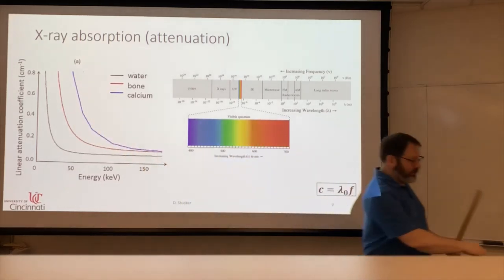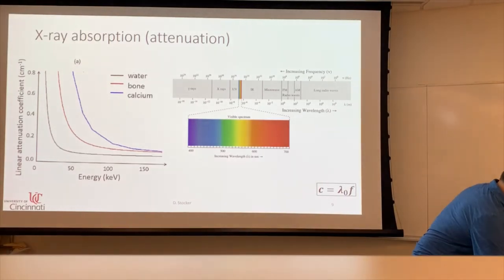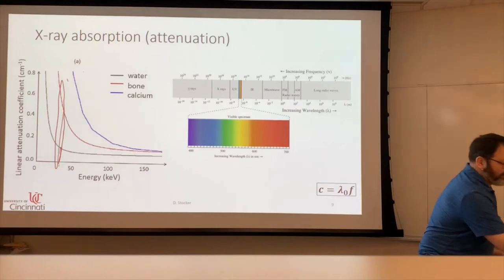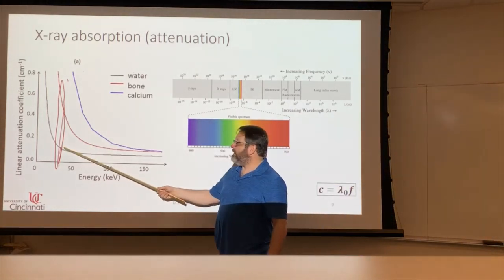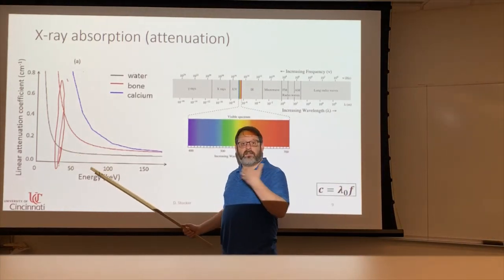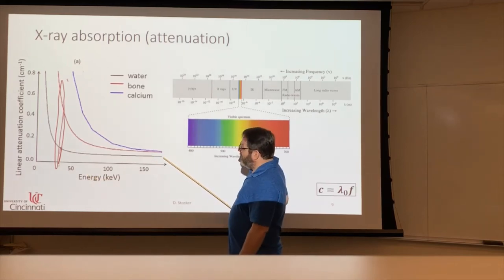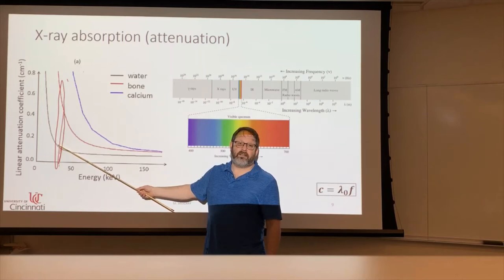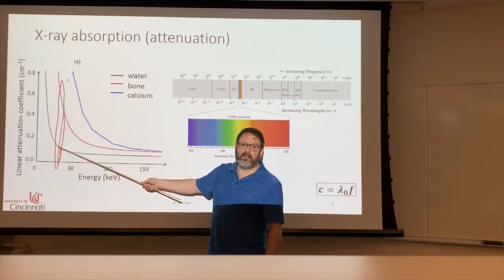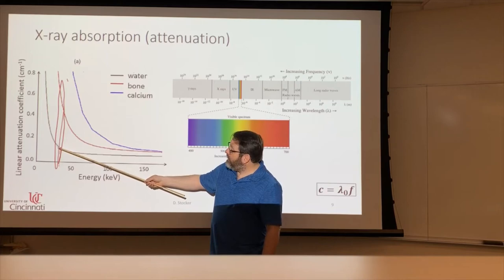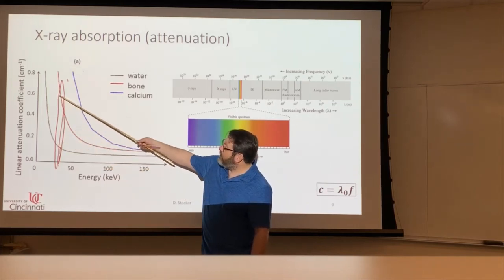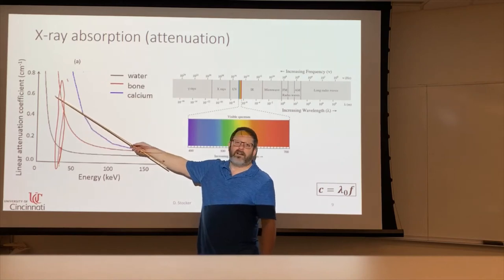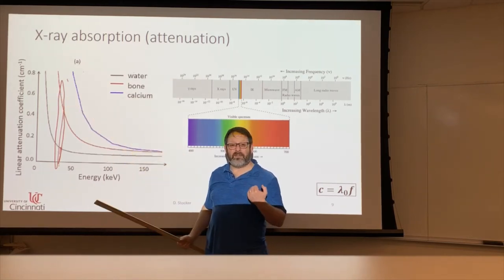Now the interesting thing is if you pick a wavelength or an energy, let's say in that area. If you picked one in this area and shown x-rays on a body, anything that's mostly made of water, most of the x-ray is going to go through. Some of it will be attenuated. But if the x-ray passes through bone, much more of the x-ray will be attenuated.